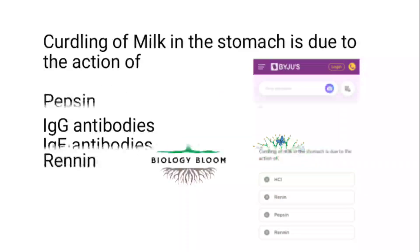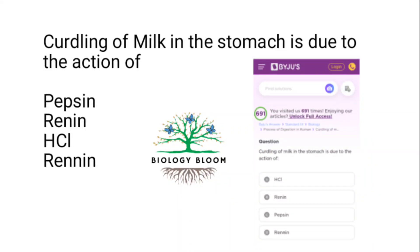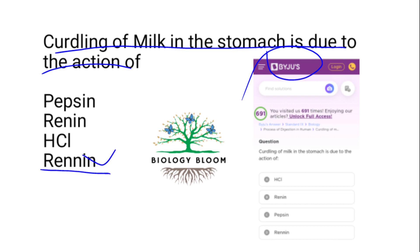Curdling of milk in the stomach — this is taken from a biology source. Milk curdling in the stomach is due to the action of Rennin — R-E-N-N-I-N.